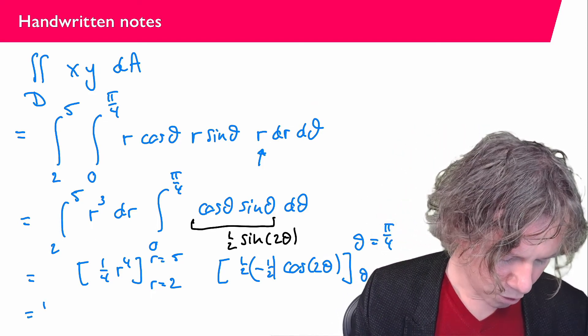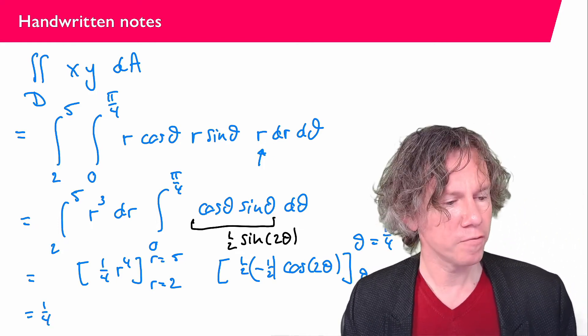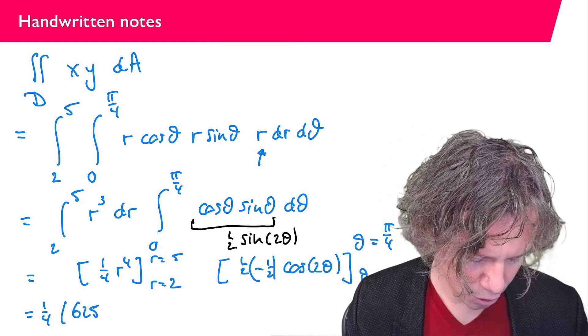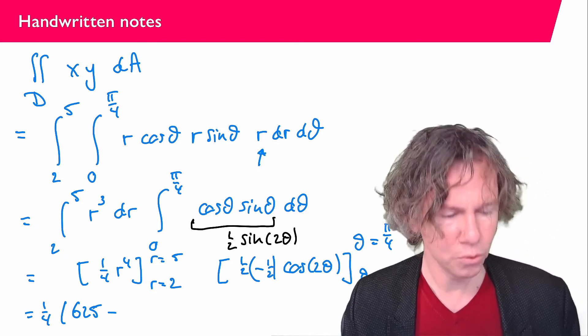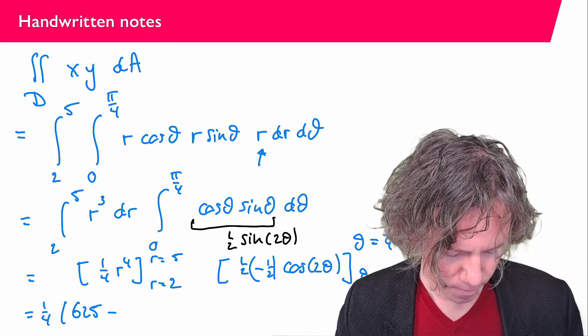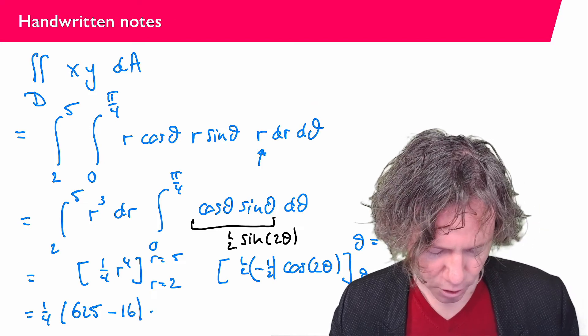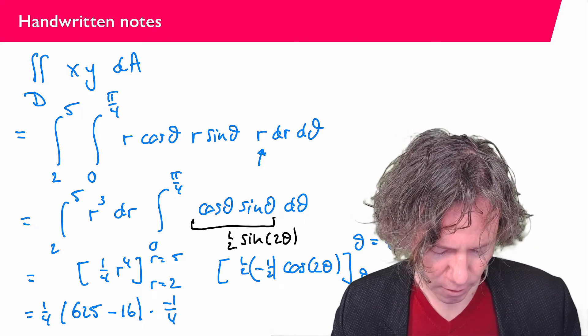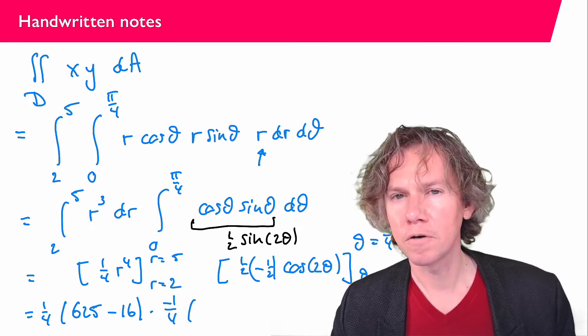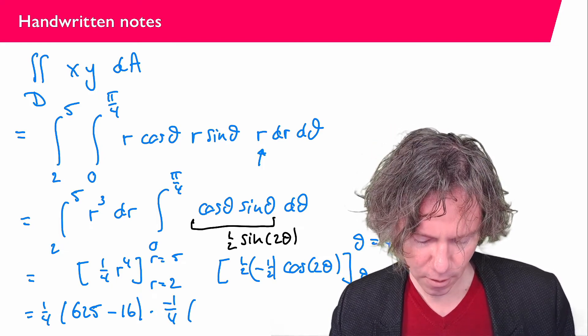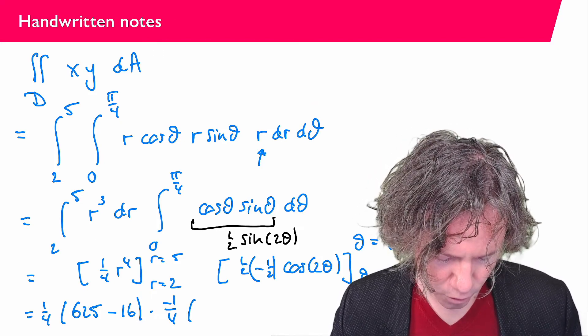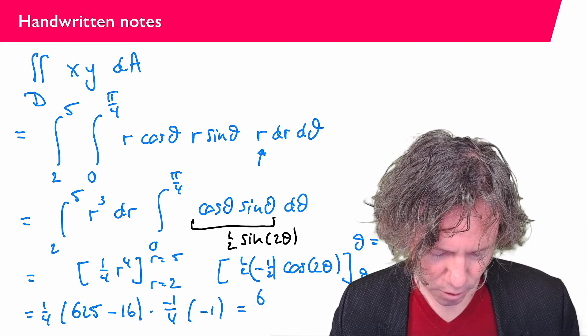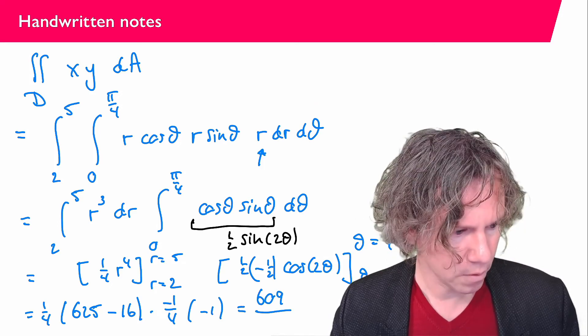So what do we find? 1 over 4 and then 5 to the power of 4, that's 25 times 25, which makes 625, minus 2 to the power of 4, that is 16. And the second integral is going to give me minus 1 over 4, that's the half times minus 1 half. And the cosine of 2 times pi over 4, that's cosine pi over 2, that becomes 0, and then times minus 1 for cosine 0. And if you put that all together, what you find is 609 over 16.